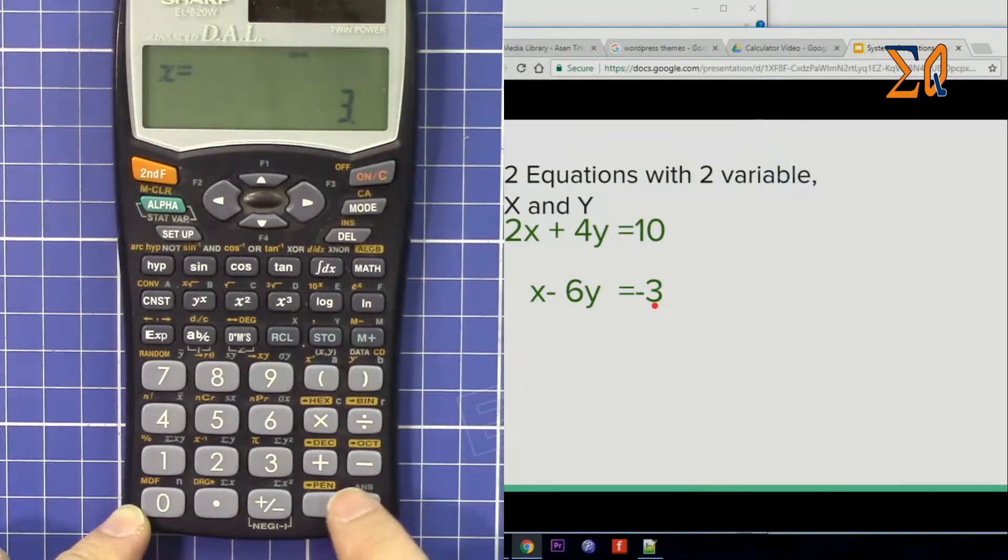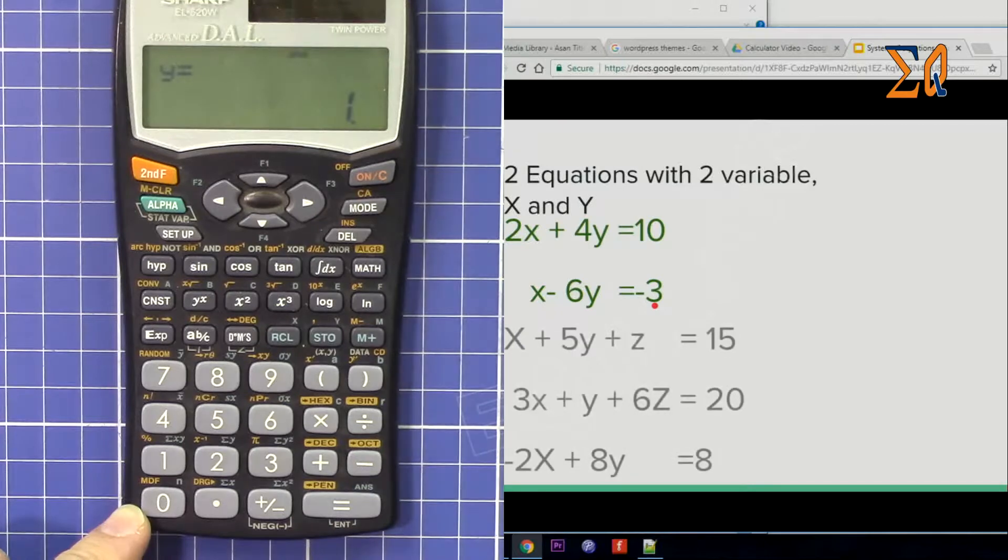The solution is X = 3. Press equal again and Y = 1. This equation is solved. Now let's go to a system of three equations with three variables.